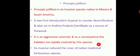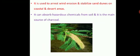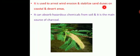Prosopis juliflora can degrade native medicinal herbs because its upper canopy shades out many species that cannot grow beneath it. It is also used to arrest wind erosion and stabilize sand dunes on coastal and desert areas. Additionally, it can absorb hazardous chemicals from soil and is the main source of charcoal.